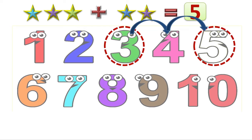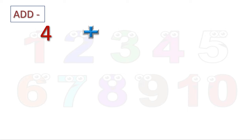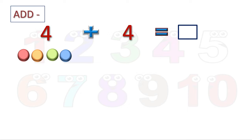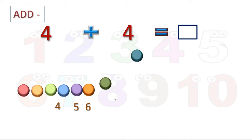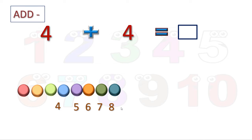Next: 4 plus 4 is equal to how much? You can see 4 gems, and again 4 gems. We will count forward — after 4 comes the 5th, then 6th, 7th, and 8th. All together we got 8 gems. So our answer is 8. That is, 4 plus 4 gives us 8.